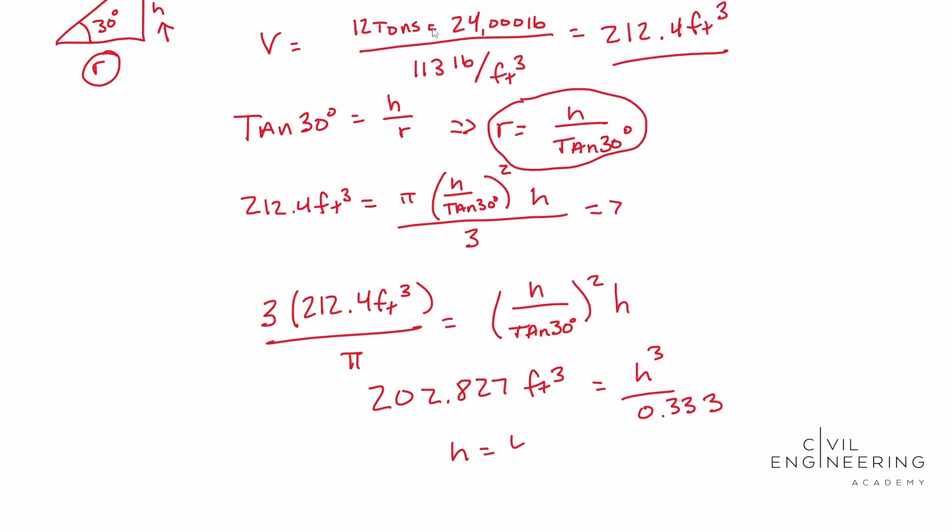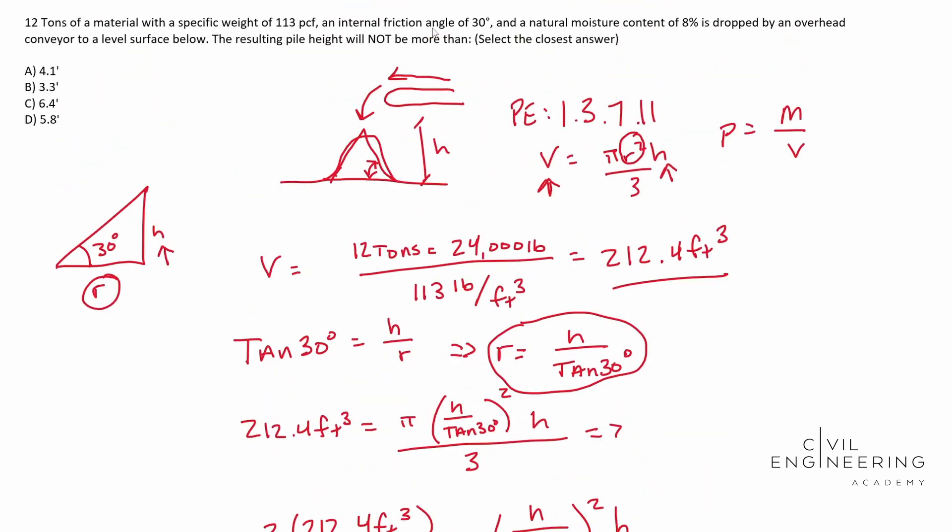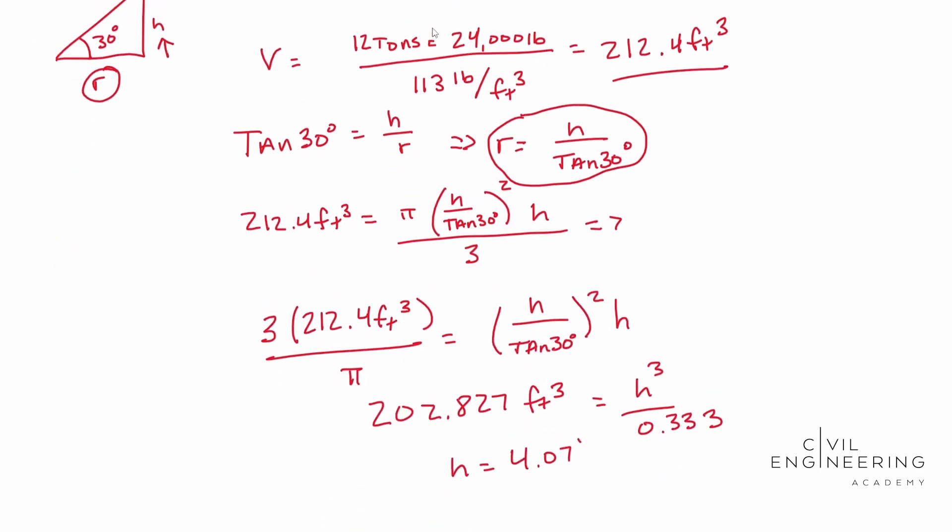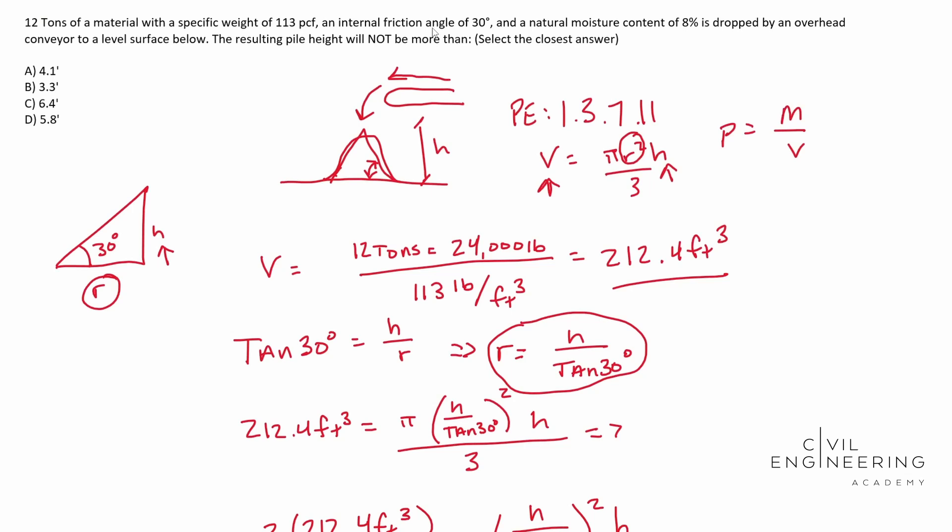But now the question was, it won't get any higher than what? The resulting pile height will not be more than what? We got 4.07. Let's look for something close. It looks like it's A. So hey, I hope this video helps and we'll catch you next time.